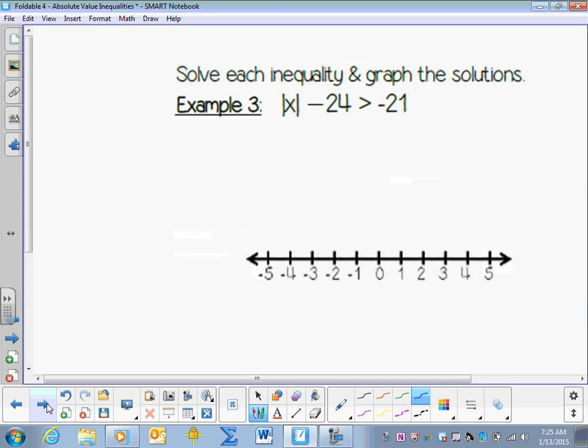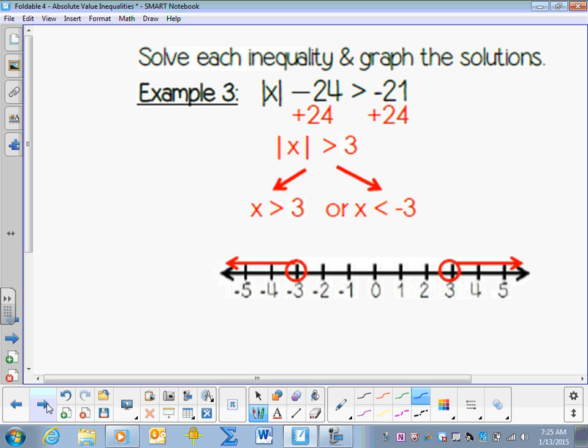Solve each inequality and graph the solutions. The absolute value of x minus 24 is greater than negative 21. Remember to isolate the absolute value. So we add 24 to both sides and we rewrite it as x is greater than 3 or x can be less than negative 3.